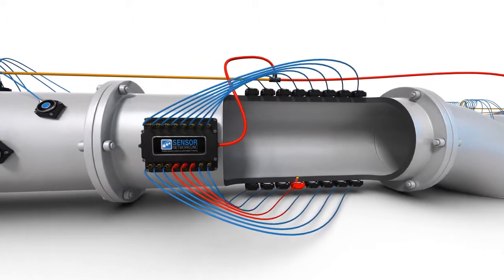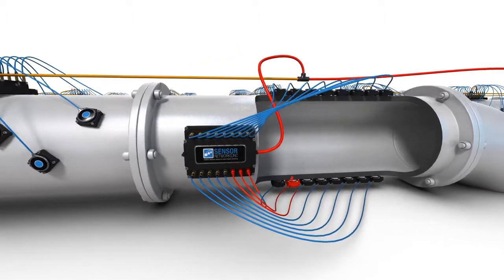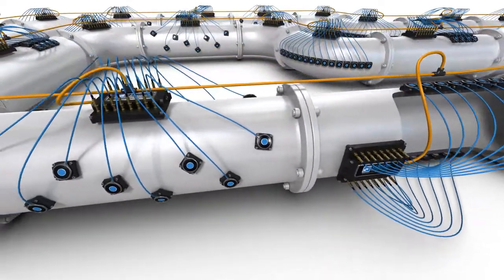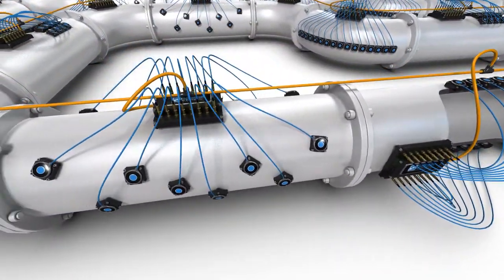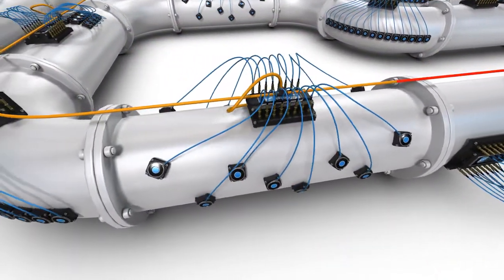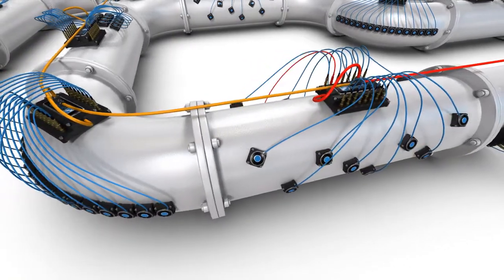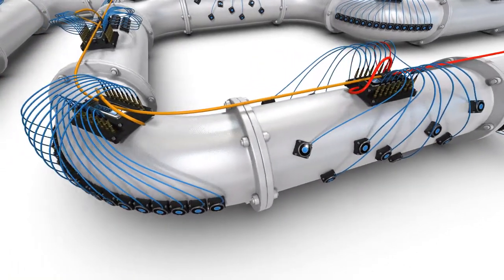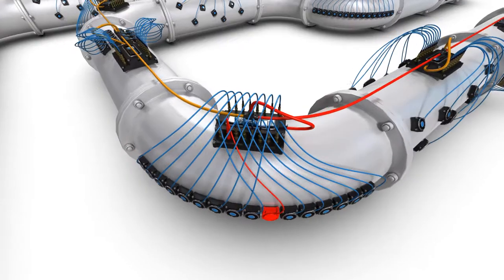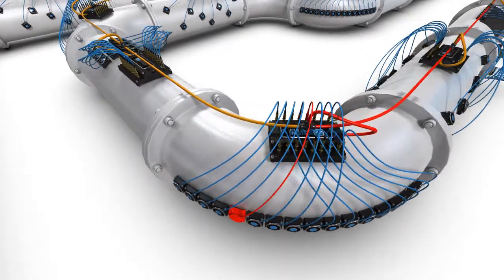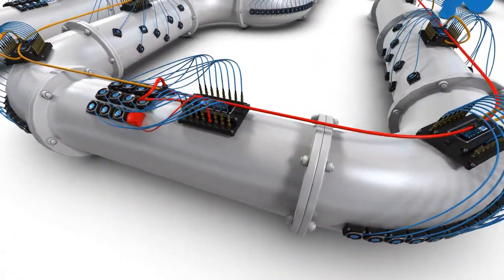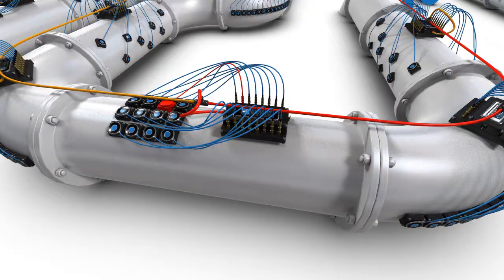The sequence is repeated for the other transducers connected to the DSI. Once a DSI has successfully communicated measurements from all its transducers, the next DSI is prompted to do the same. For any given DSI, transducers may be arranged randomly, or in a linear or area array, giving you the versatility to monitor unique geometries, such as pipe elbows.